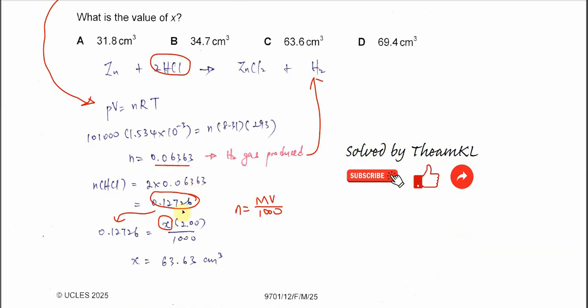So we need to use X times 2 moles per dm³ over 1000, equal to this mole, rearrange, you should get 63.63. So means answer is C. That's all. Thank you.